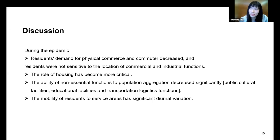Therefore, during the epidemic, residents' demand for physical commerce and commute decreased, and they were not sensitive to the location of commercial and industrial functions. As revealed by previous studies, the role of housing has become more critical during the epidemic. Our research confirms that resident demand for residential functions increased significantly during the epidemic. The effective control of the epidemic in Tianjin and even in China benefits from prevention measures of home isolation based on community.